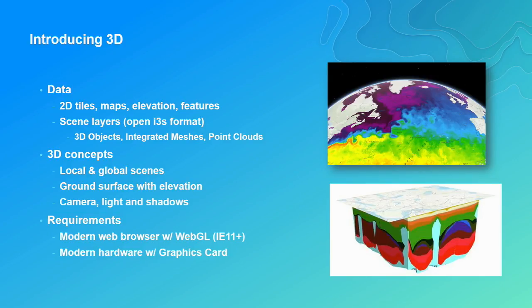3D in the JS API is new — it's only in 4X. A few years ago in 3X we didn't have 3D in JavaScript. 3D can work with your existing data: 2D tiles, maps, elevation data, rasters, and features. It also works with specific 3D layers called scene layers. It introduces new concepts like the type of scene — local and global — and introduces the ground surface. In 3D you can actually go underground, and the layer representing the Earth's surface is the ground, a very important component.